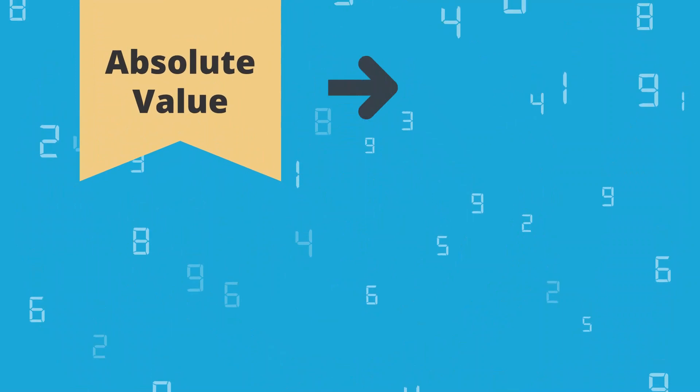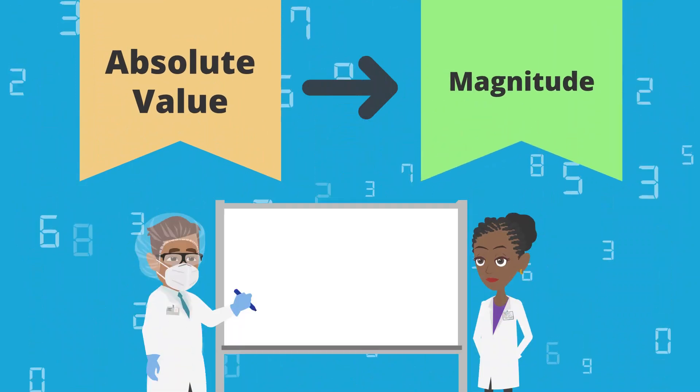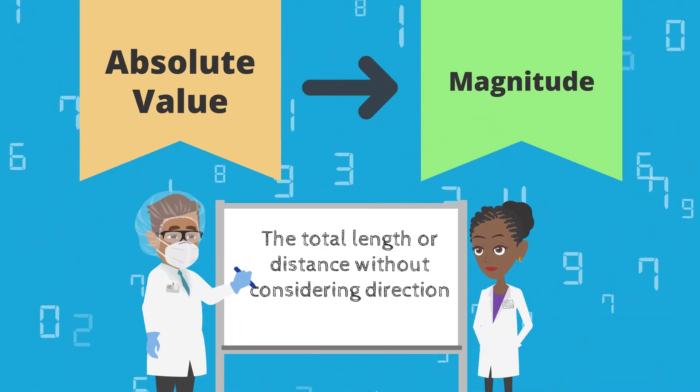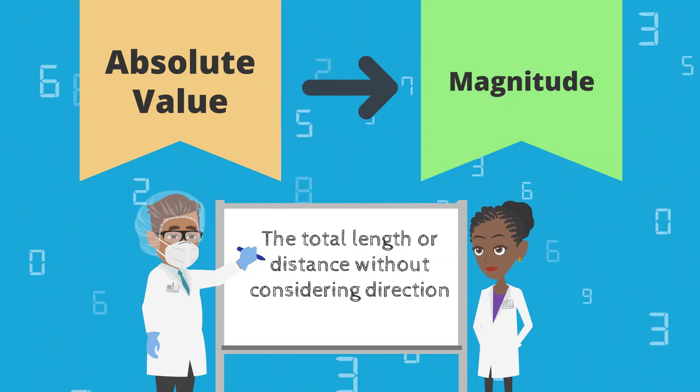Absolute value is also known as magnitude and is used by scientists to measure the total length or distance without considering direction.